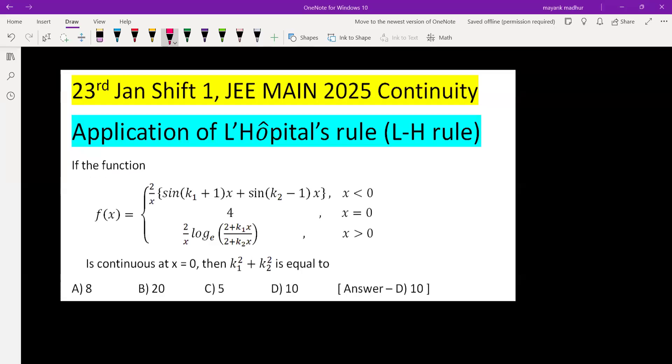If the function f(x) equals (2/x)[sin(k₁+1)x + sin(k₂-1)x] when x < 0, equals 4 when x = 0, and 2log((2+k₁x)/(2+k₂x)) when x > 0, is continuous at x = 0.